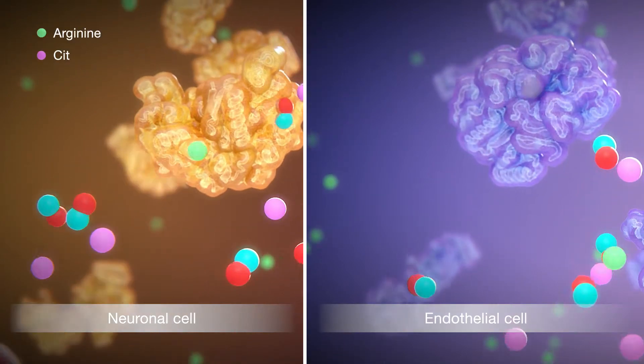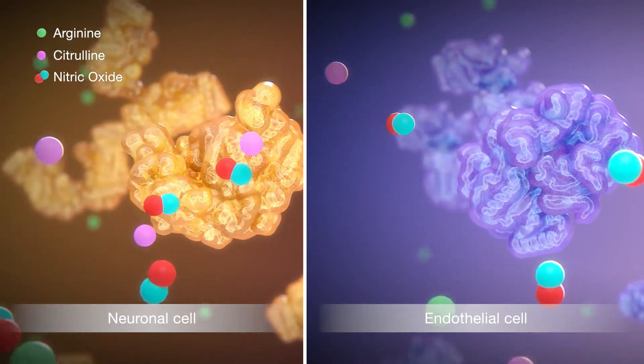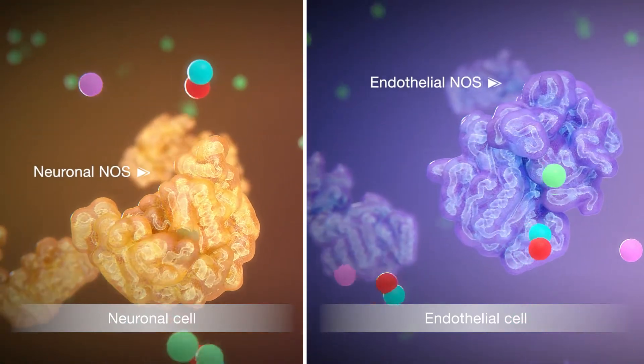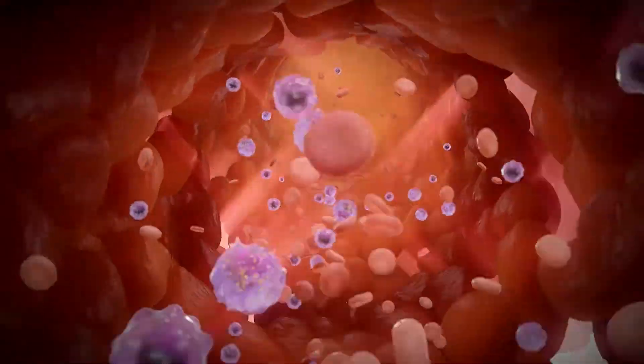It is continuously produced at low levels by the constitutive enzymes endothelial NOS and neuronal NOS. TBI causes the blood brain barrier to become damaged and lose integrity.